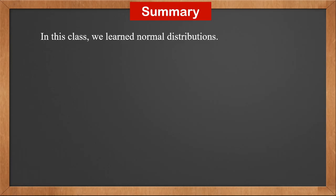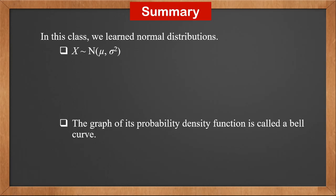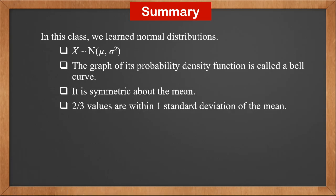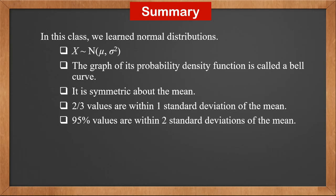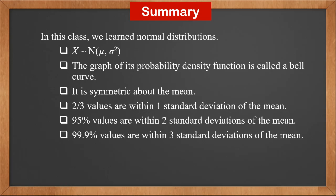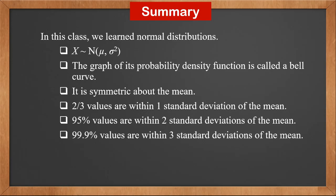In this class, we learned normal distributions. It is written as x ~ N(mu, sigma squared). The graph of its probability density function is called a bell curve. It is symmetric about the mean. Two thirds of values are within 1 standard deviation of the mean. 95% of values are within 2 standard deviations of the mean. 99.9% of values are within 3 standard deviations of the mean. Sketch with 5 points. A distribution with a larger variance is lower and wider.